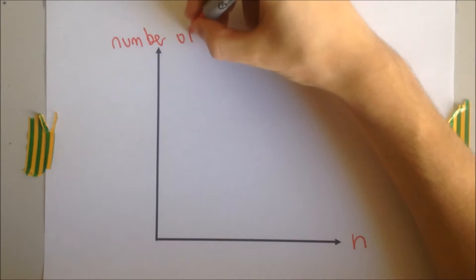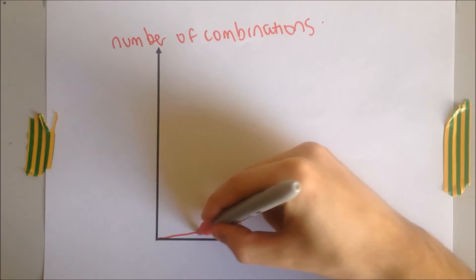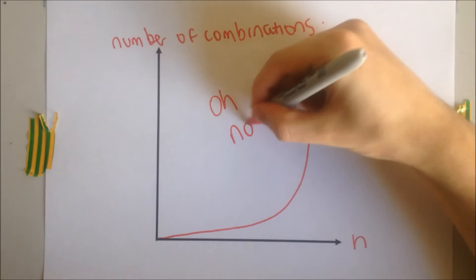We can draw it on a graph. As n increases, the number of assignment combinations gets incredibly large, n factorial in fact, which makes it nearly impossible to effectively guess the solution. This is where the algorithm comes in.